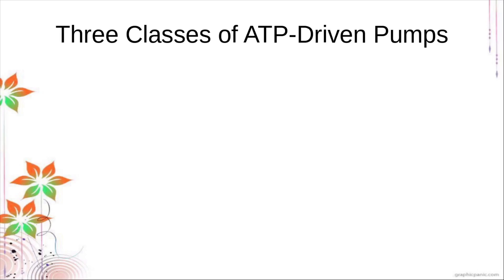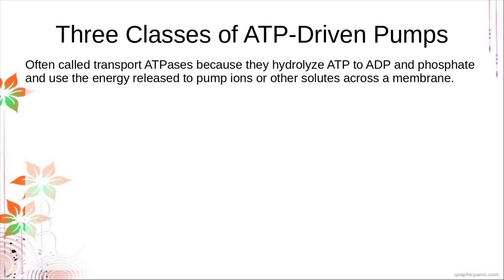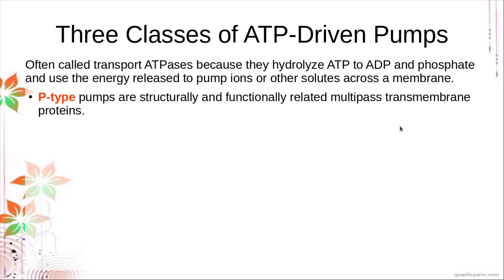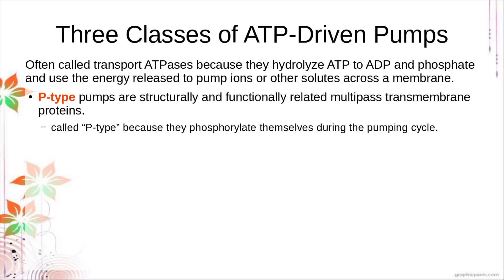Now let's look at the ATP-driven pumps. We often call them ATPases because they hydrolyze ATP to ADP and phosphate, using the energy released to pump ions or other solutes across the membrane. We have P-type pumps: structurally and functionally related multi-pass transmembrane proteins. They are called P-type because they phosphorylate themselves during their pumping cycle. ATP hydrolysis is what drives them — we cleave one phosphate group from ATP to produce ADP, and that removed phosphate group is transferred from the ATP molecule to the P-type pump itself.